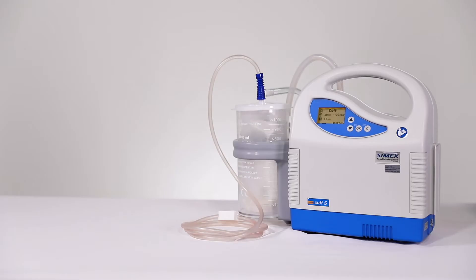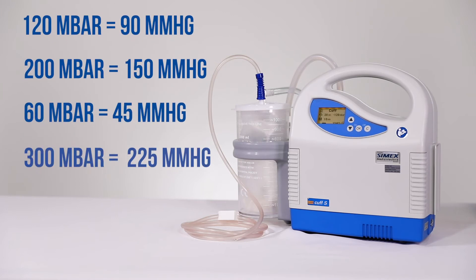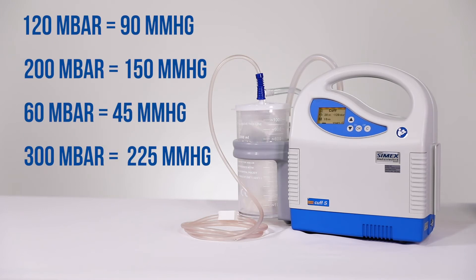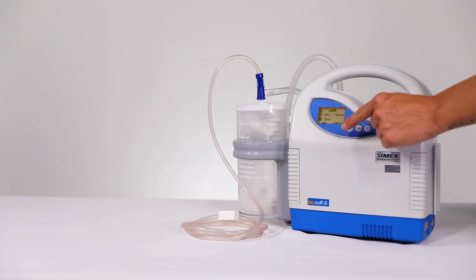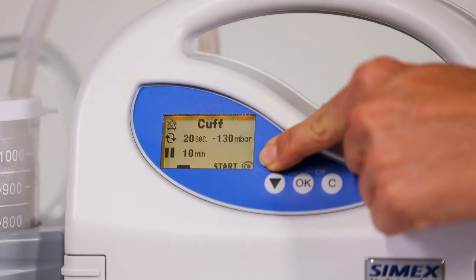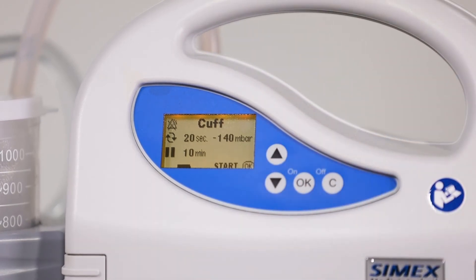Next, adjust the desired pressure. The default pressure is 120 millibar, equivalent to 90 millimeters of mercury, with a pressure range of 60 to 300 millibar. Adjust pressure for your patient based on your facility-determined algorithm for your Cymex device.